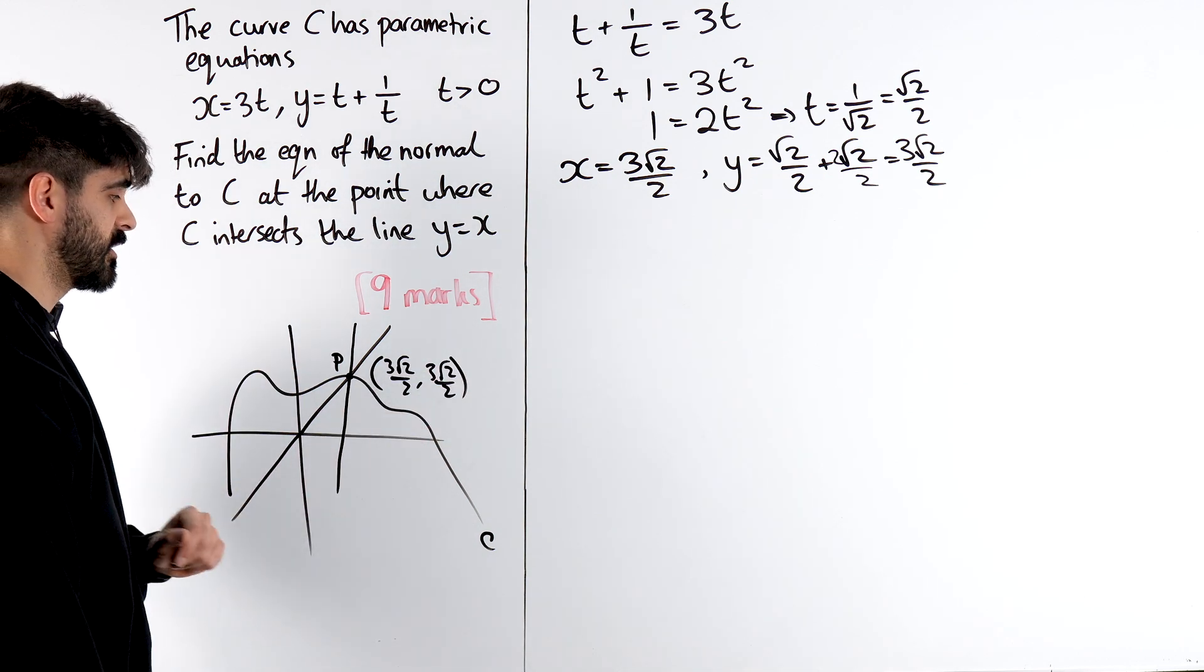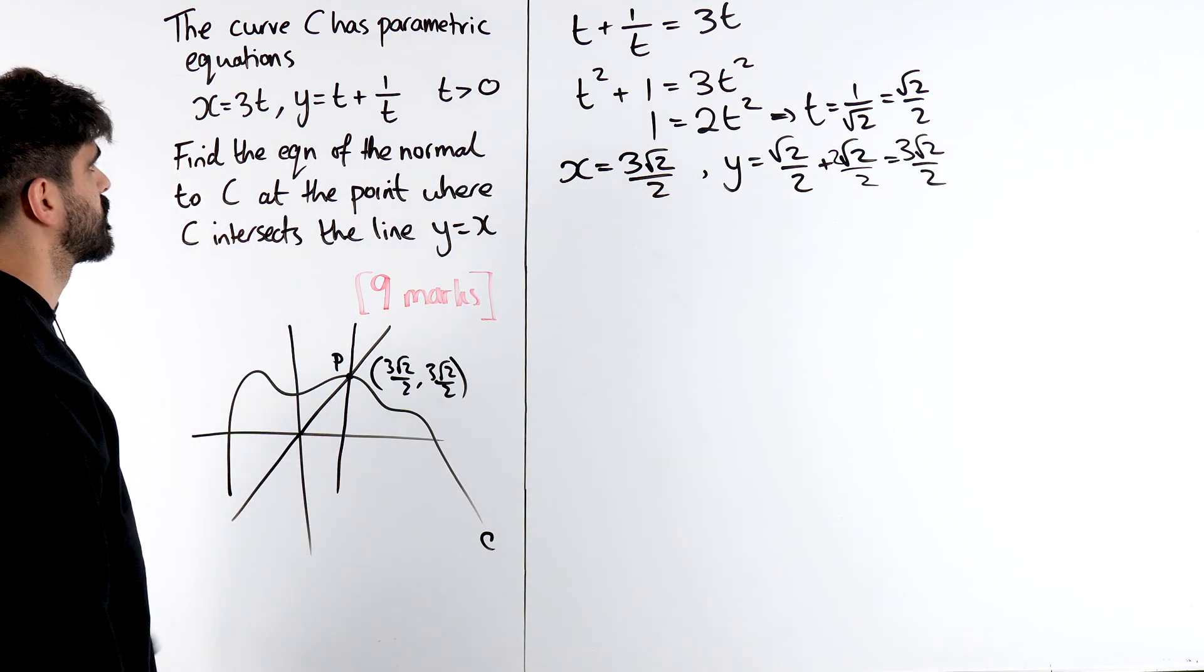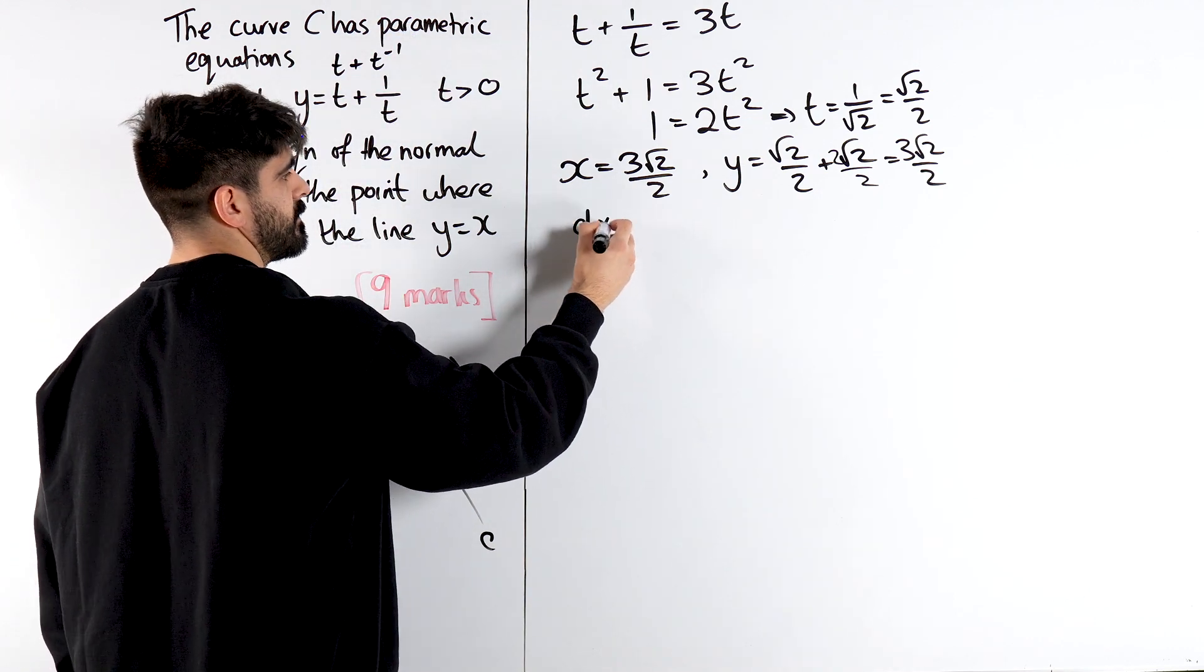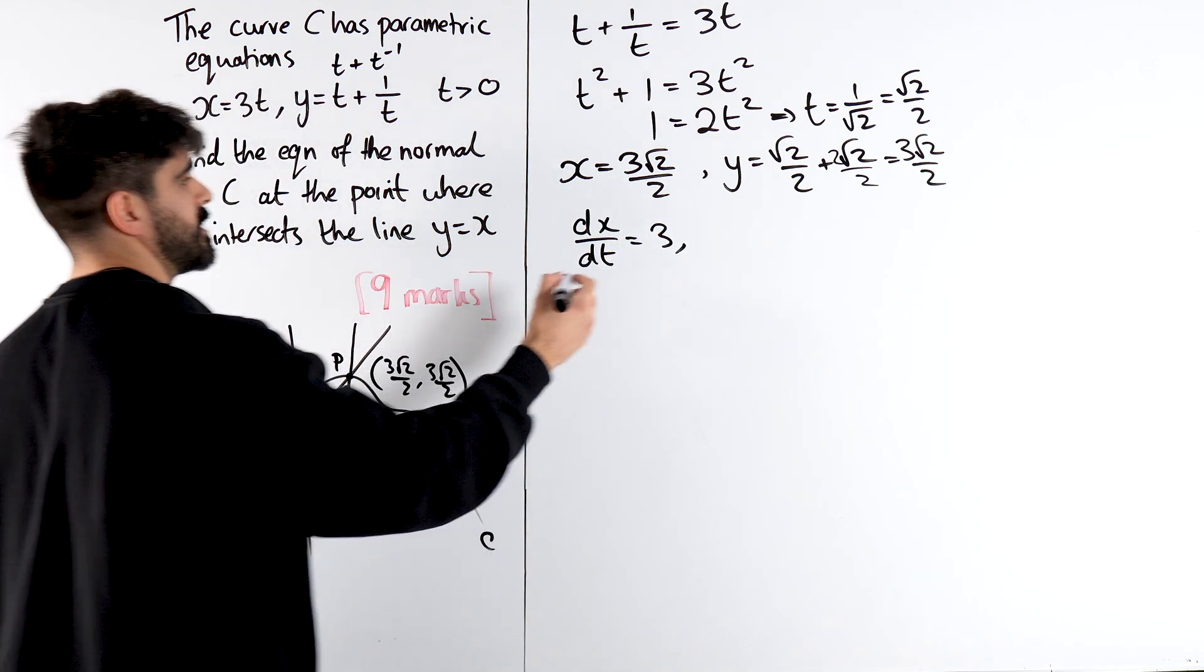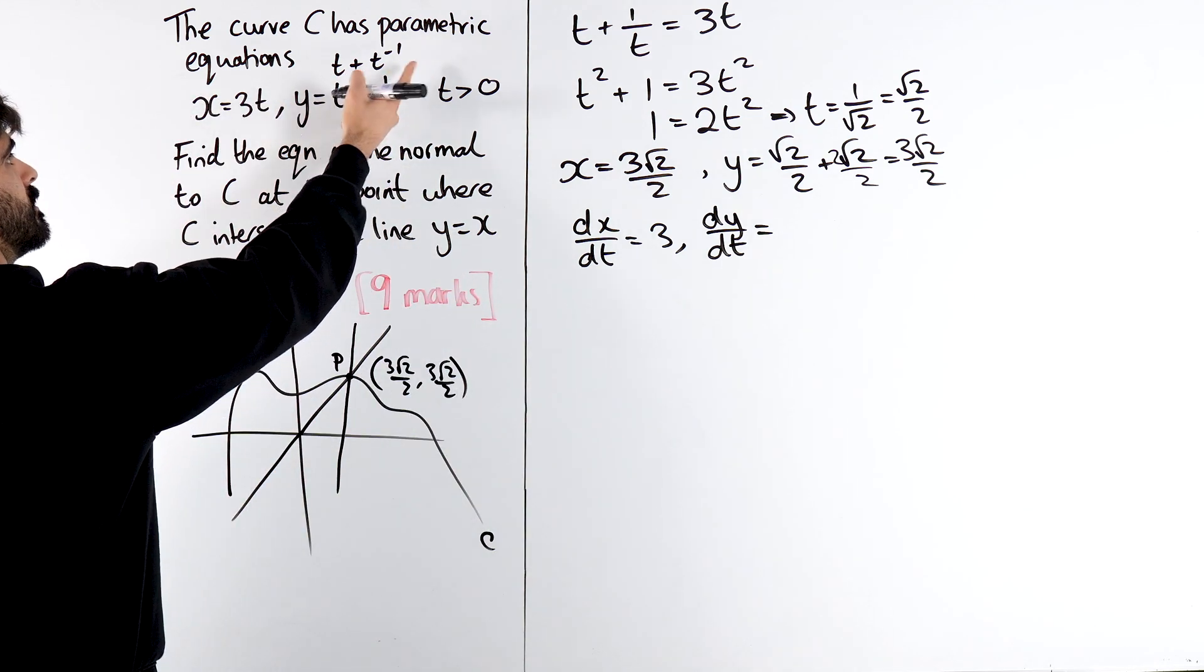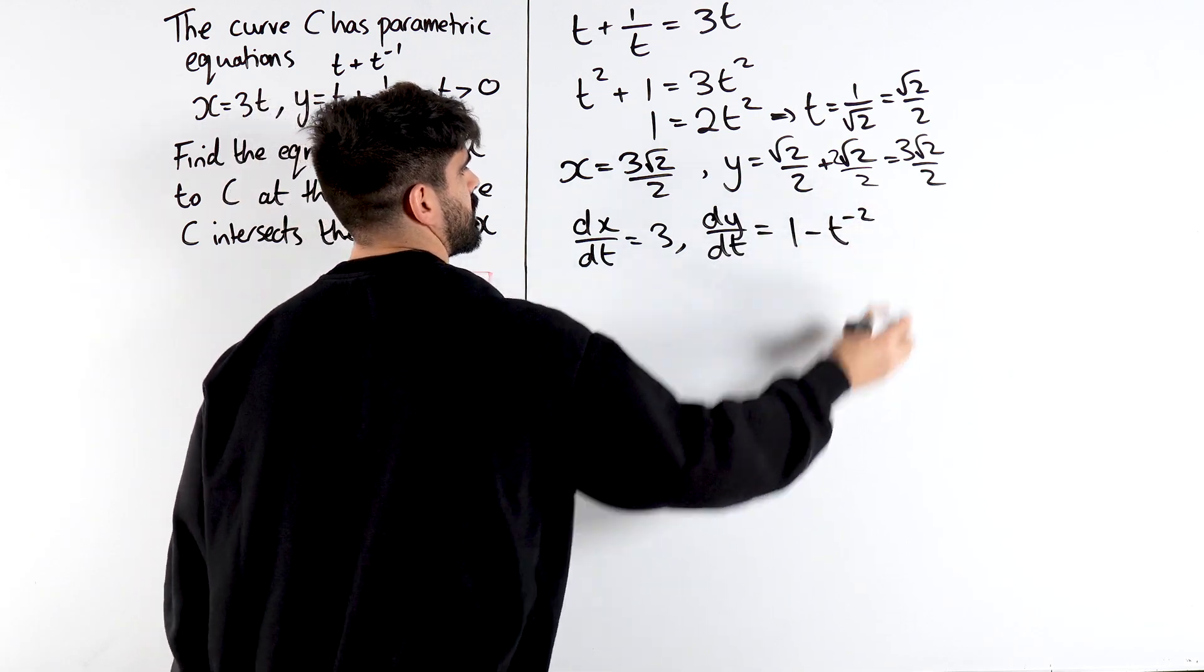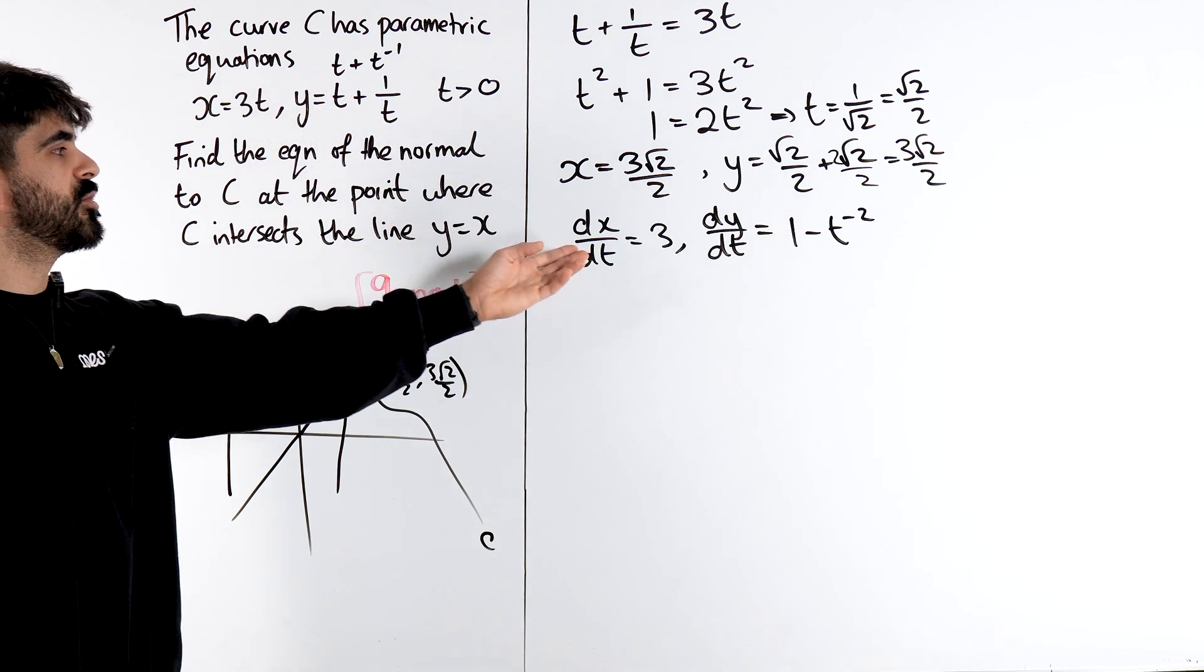So now, we can work out the equation of the normal. Now what's the most important thing you need to work out is the gradient, so we're going to have to differentiate this. I'm going to plan ahead, I'm going to write this as t plus t to the minus 1, and let's differentiate dx by dt is 3. Differentiating this dy by dt is, differentiate t is 1, then minus 1 t to the minus 2. So 1 minus t to the minus 2. That's the differential of that.